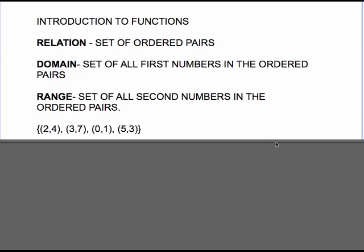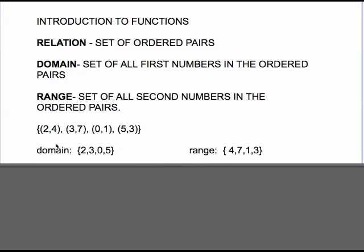So take a set of numbers, that right there is a relation because it's a set of ordered pairs. I can have one number in my relation, I can have a bazillion numbers in my relation. It's just a bunch of points. To name the domain, the domain is all the first numbers. So 2, 3, 0, 5 makes up my first set because that's the domain and the range will be your second numbers 4, 7, 1, 3. There's nothing fancy about the order you put these in.